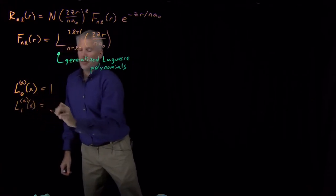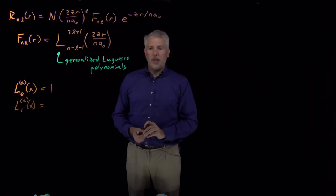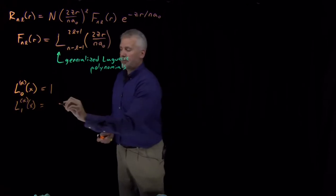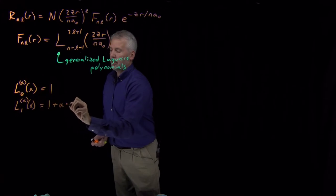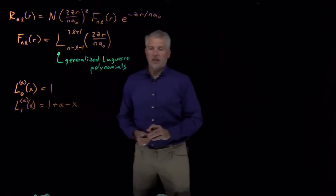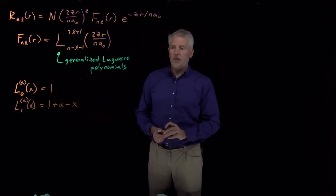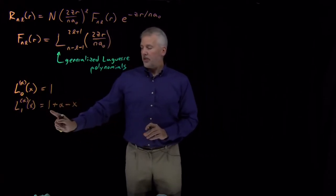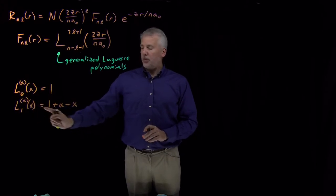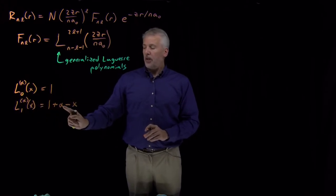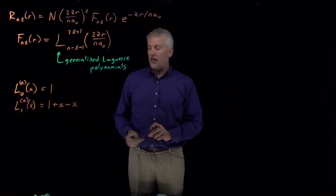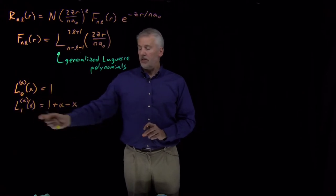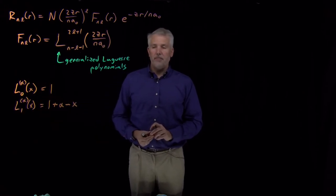If there's a 1 as a subscript, they're a little more complicated but not very much. It's 1 plus alpha minus x — that is, 1 plus the superscript value minus x. That's the family with the subscript of 1.